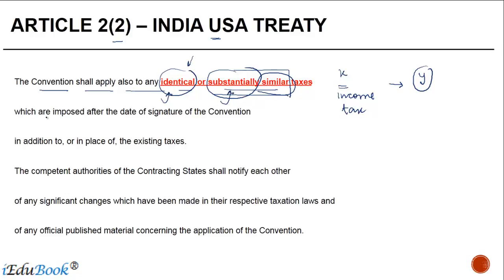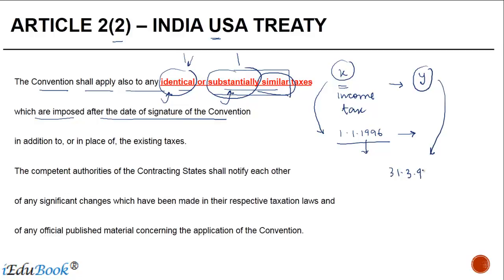The convention shall also apply to any identical or substantially similar taxes imposed after the date of signature of the convention. For example, if India enters a treaty on 1/1/1996 and after that date imposes another tax Y — levied say on 31/3/1997 — which is substantially similar or identical to the original tax X in terms of manner of computation and the persons to whom it applies, then whether Y is in addition to or in place of X, this article shall also apply to the new tax.